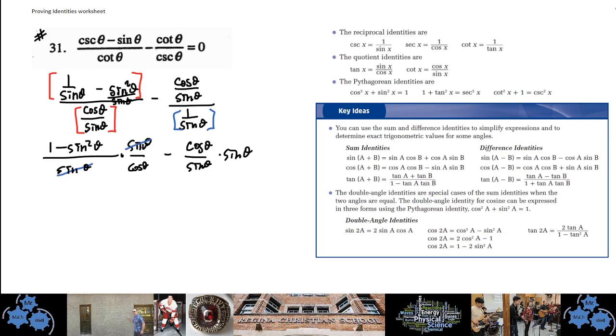Alright, so we've kind of dealt with these fractions a little bit. Now what I see is I've got a sine theta and a sine theta—they're both factors top and bottom—can divide those out. And as well over here. So now what I have is one minus sine squared theta over cosine theta. Beautiful. Over here I've got minus just plain old cosine theta.